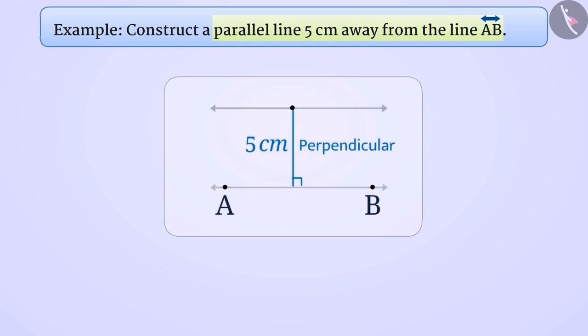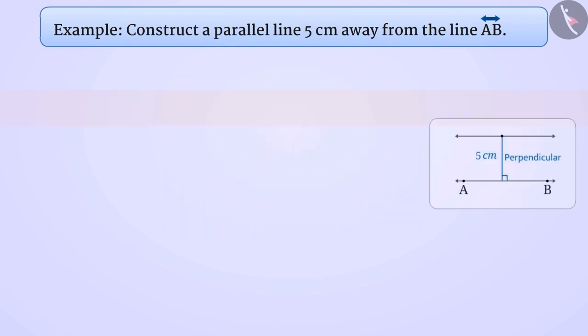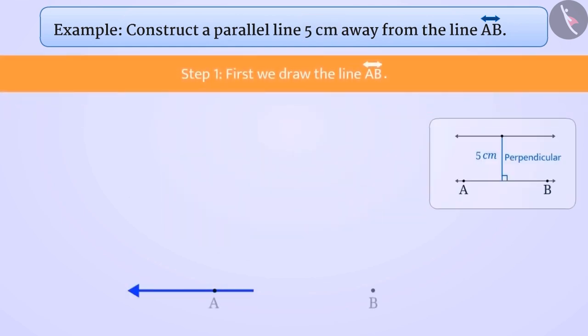Let's begin with the construction of parallel lines placed at a distance of 5 cm. Step 1: First, draw the line AB.